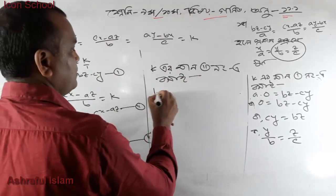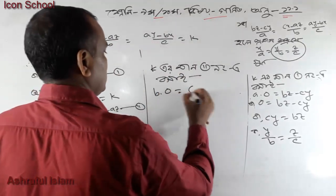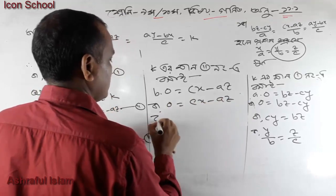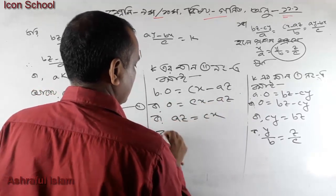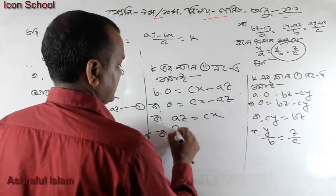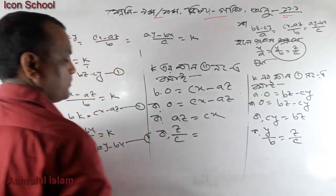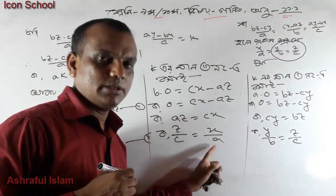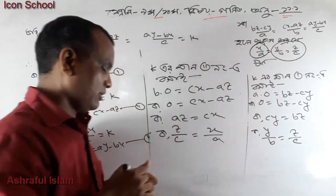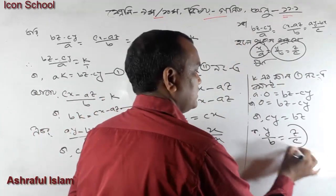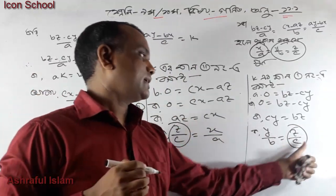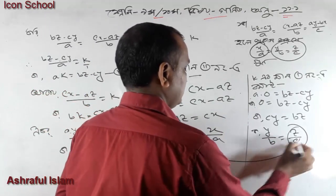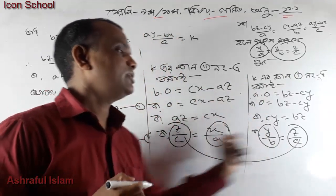So let's see: b into 0, b into 0, so cx minus az, so minus az, plus cx minus az. Now let's see: az is equal to 2 and c is equal to 2. If x equals zx minus z, so z equals z minus az. Comparing the two: z minus z minus z minus a, more than z minus z minus c, and y minus b equals z minus z minus c.